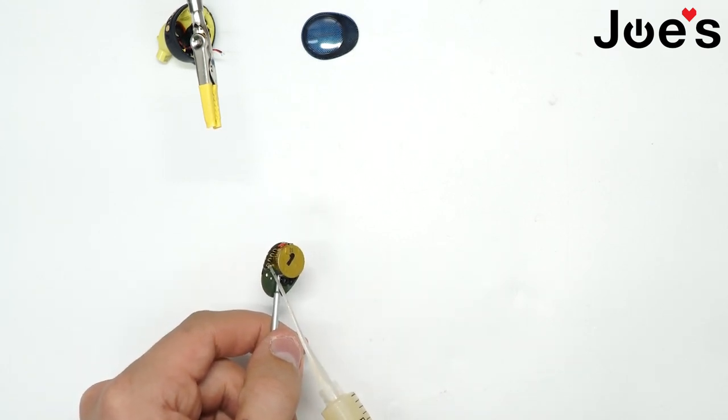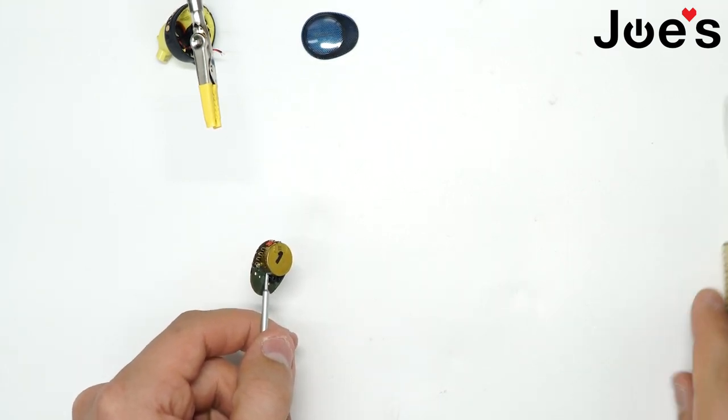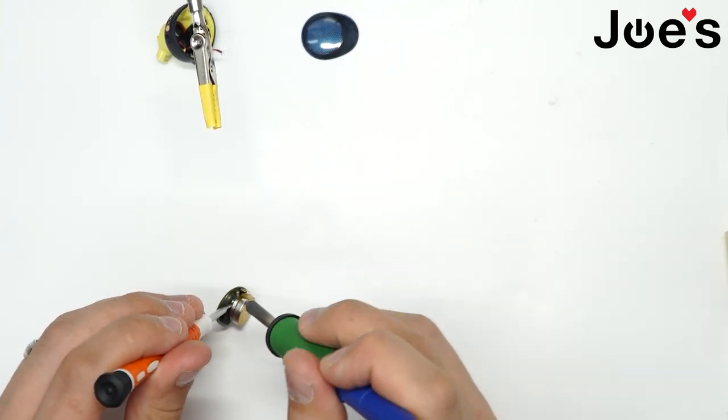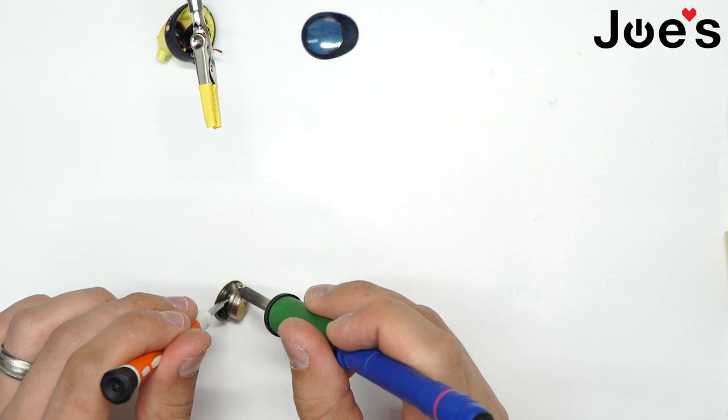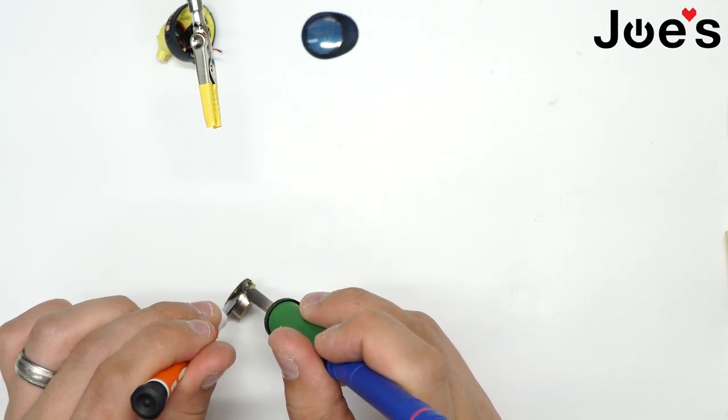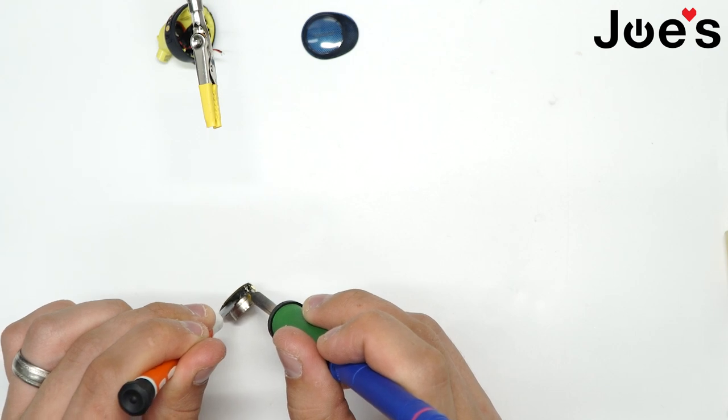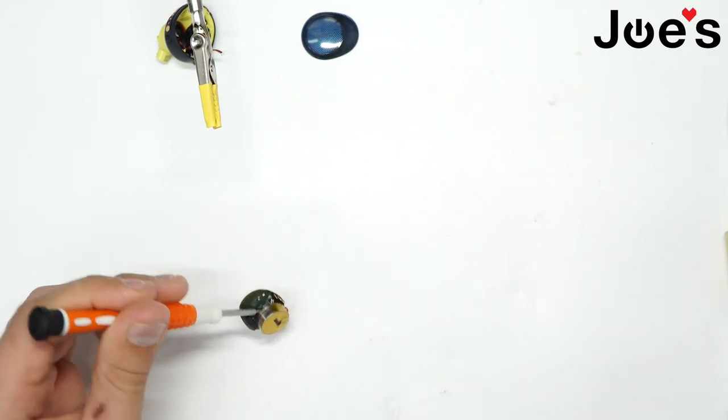And now once you have the screwdriver in there, take some flux and start applying some heat while you're going to be pushing down on the table. So once you're pushing down on the table, pop right off.